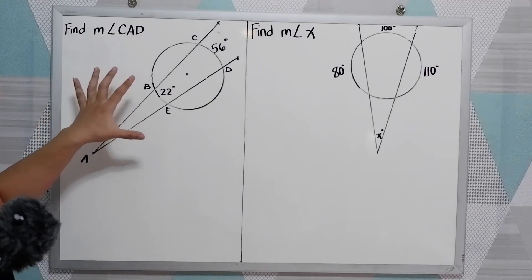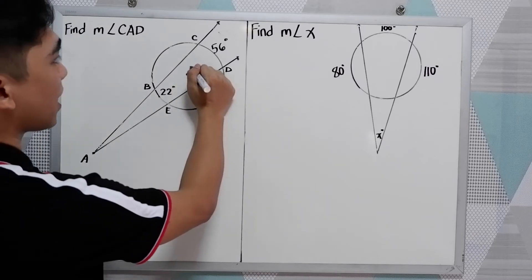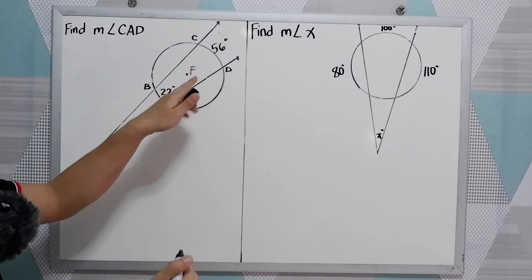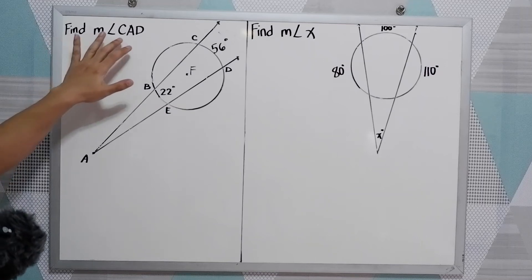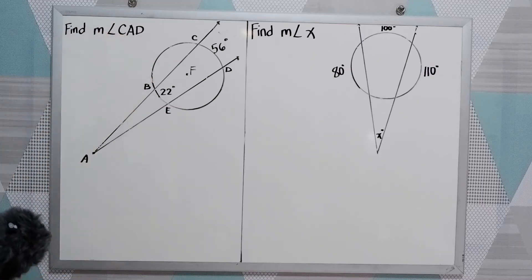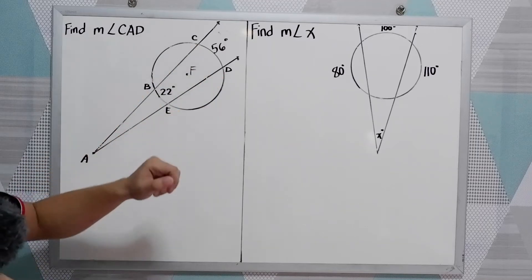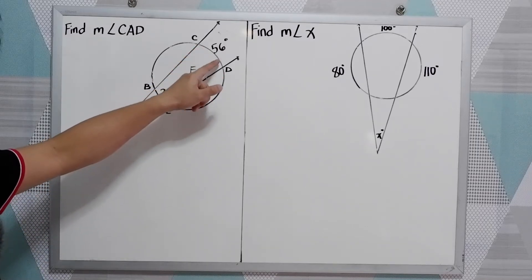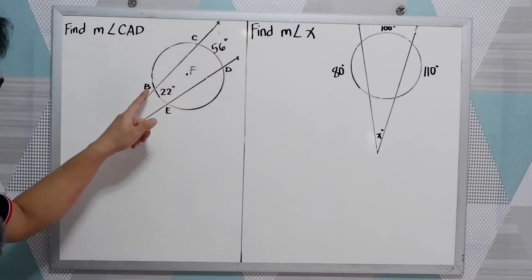In our first illustration, we have circle F. We're going to find the measure of angle CAD. Where is angle CAD? Given the arc CD measures 56 and the arc BE measures 22.